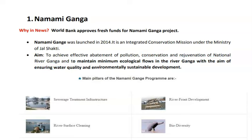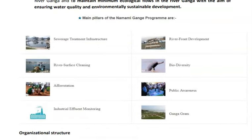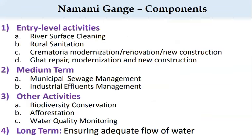Moving to the main pillars of the Namami Gange program — the first is sewerage treatment infrastructure. The Namami Gange components are categorized as entry level activities: river surface cleaning, rural sanitation, crematorium modernization, and ghat repair and new construction of ghats.